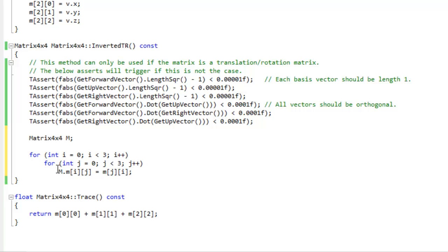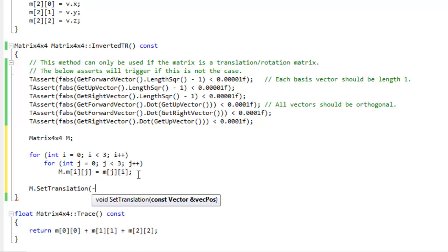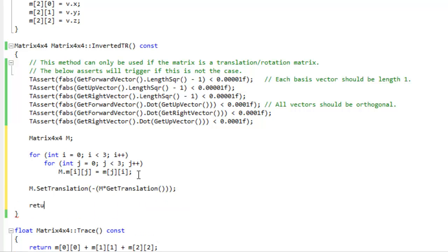So here you can see I'm setting the matrix M, the upper 3x3, to be the transpose. You see here I said IJ, and here I said JI. So I switched around the indexes. That will transpose the upper 3x3 matrix. Now I'm going to set the translation part to be the negative of this 3x3 transposed that I just made times the translation from the original matrix. And then return M.